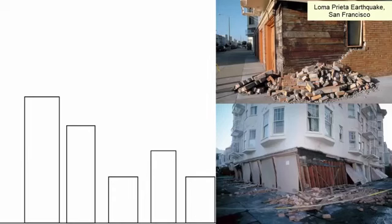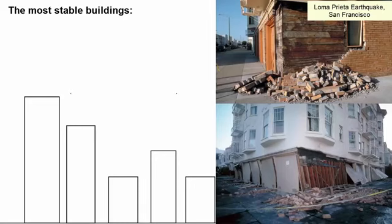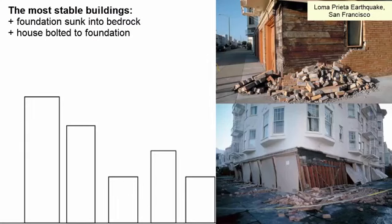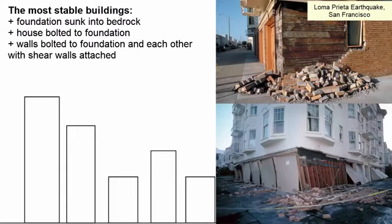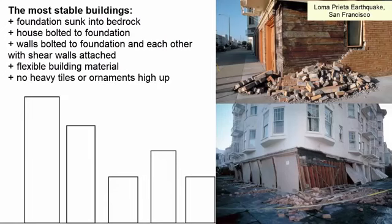In addition to the local soils, rocks, and geology, the type of building material will also impact how severely a particular earthquake is experienced by the people living in an area. Urban areas prone to earthquakes will often develop strict building codes to minimize these impacts. For example, if a building's foundation is sunk deep and solidly into the bedrock, it will move with the ground and be less likely to break apart. If the walls of the house are bolted to the foundation, they'll move with the foundation. If the walls are bolted to each other, it further connects everything so it all moves as one. If we build houses out of flexible material like wood, they're less likely to break as they bend. If we minimize the use of rock tiles and ornamental door headers, we're less likely to have these fall and cause damage during an earthquake.